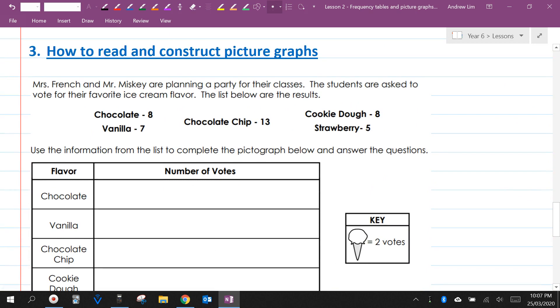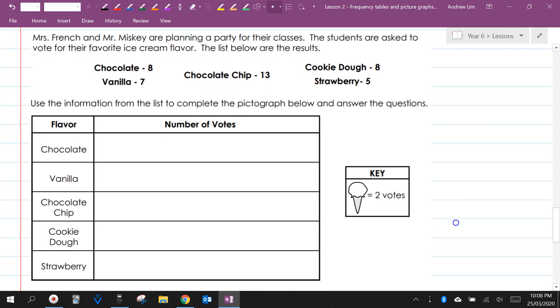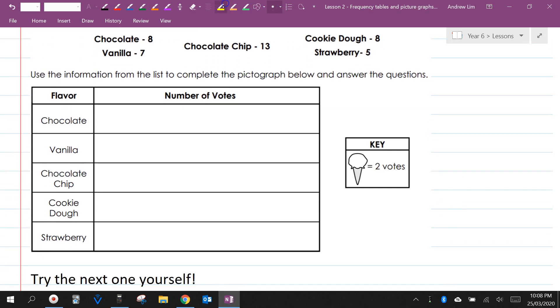Let's move on to the last thing for this lesson, which is how to read and construct picture graphs. So Mrs. French and Mr. Miski are planning a party for their classes. The students are asked to vote for their favorite ice cream flavor. The list below are the results. Eight said chocolate, seven said vanilla, thirteen for chocolate chip, eight for cookie dough, and five for strawberry. Use the information from the list to complete the pictograph below and answer the questions. And here we have a key, which is very important.